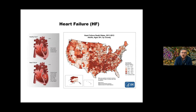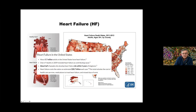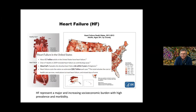We picked heart failure as our disease model. Heart failure is a serious problem in the United States — everywhere you see very dark red on the map is where heart failure has very high incidence, on the order of 228 to 709 people per hundred thousand. About 5.7 million adults in the United States have heart failure. One in nine deaths in 2009 included heart failure as a contributing cause. Half of people who develop heart failure die within five years of diagnosis. Heart failure costs the nation an estimated 30.7 billion dollars each year, including healthcare costs, medications, and missed days of work. It represents a major and increasing socioeconomic burden with high prevalence and morbidity.